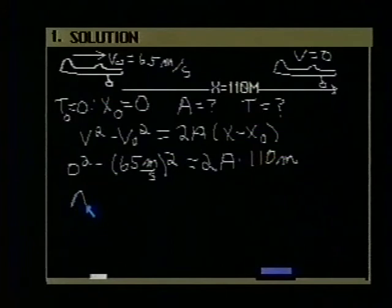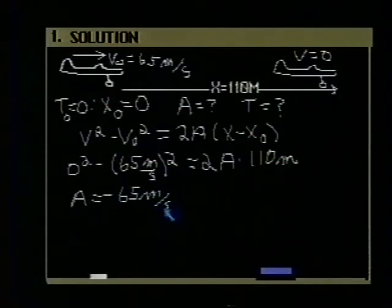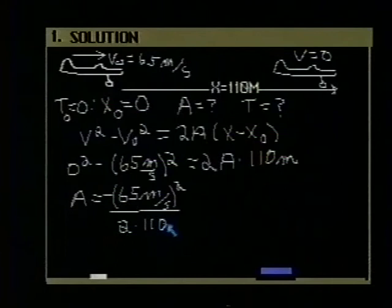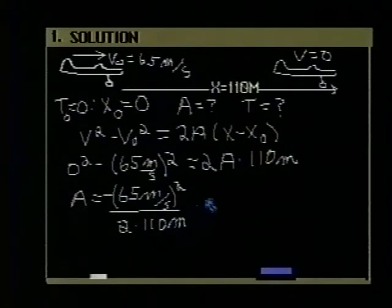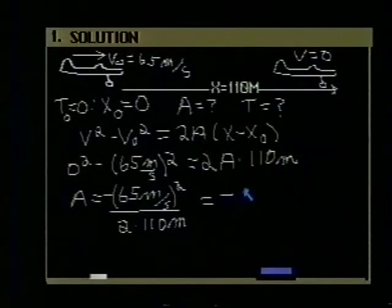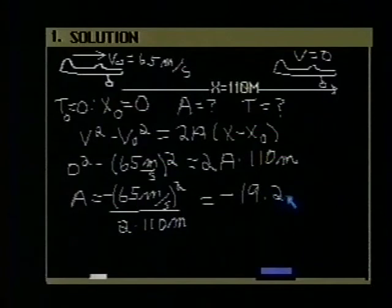Solving then for the acceleration, we find that the acceleration is minus 65 meters per second, that quantity is squared, divided by two times 110 meters. If you use your calculator to work this out, see if you get minus 19.2 meters per second per second.